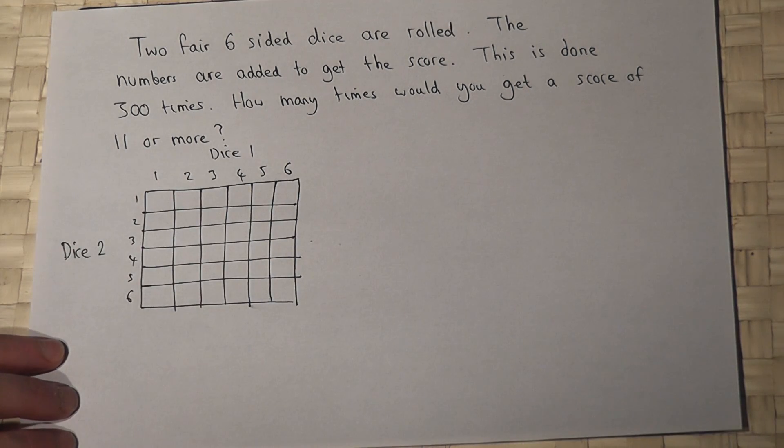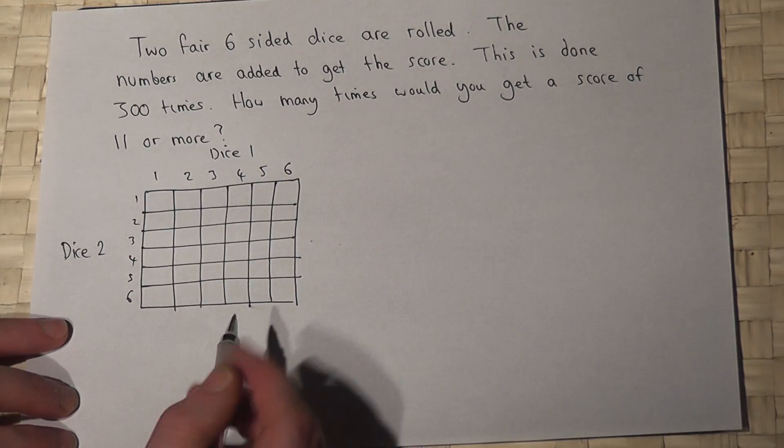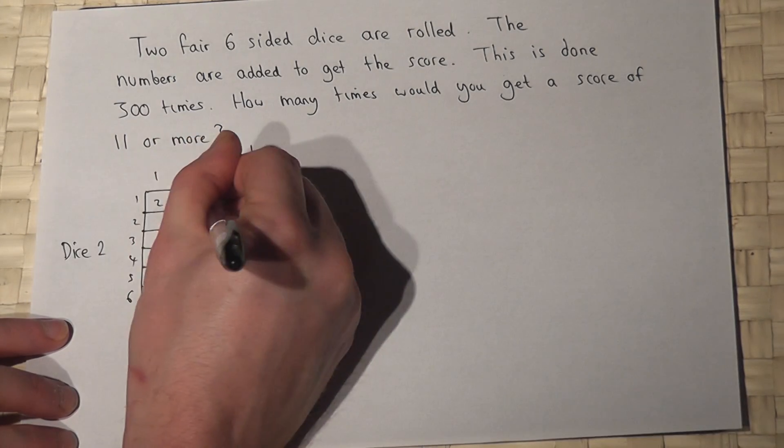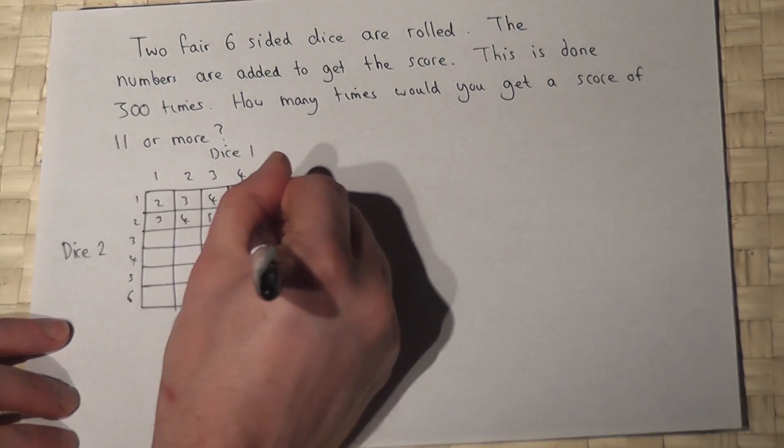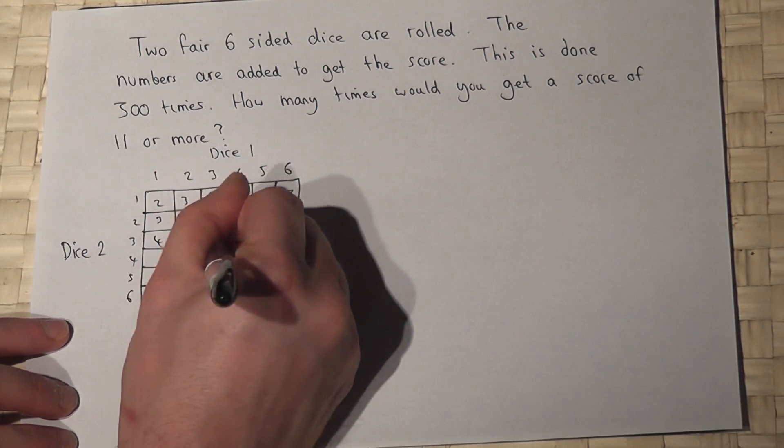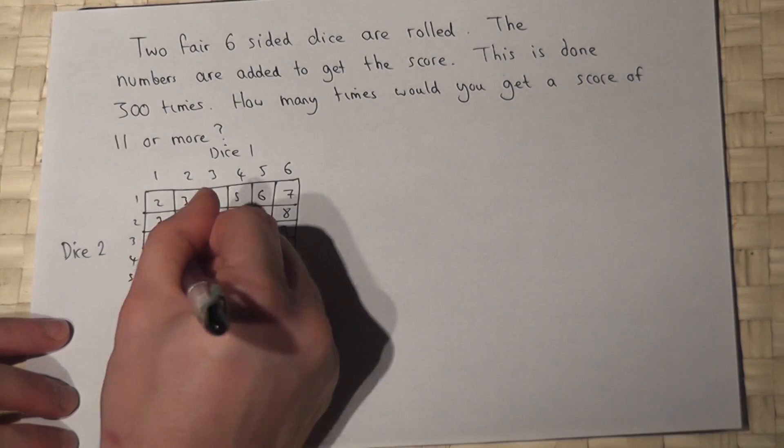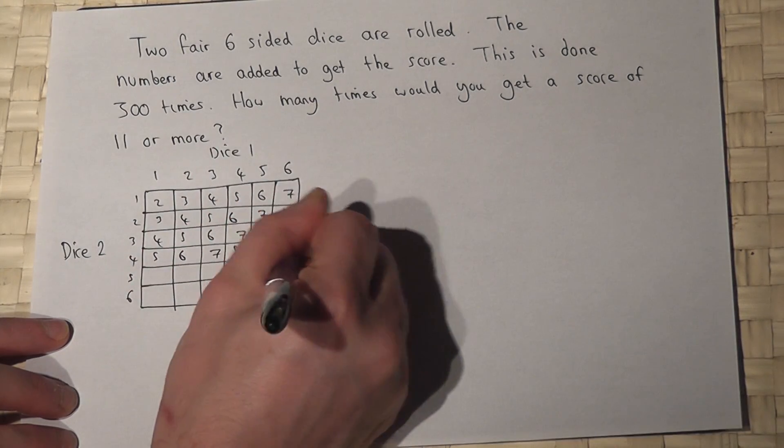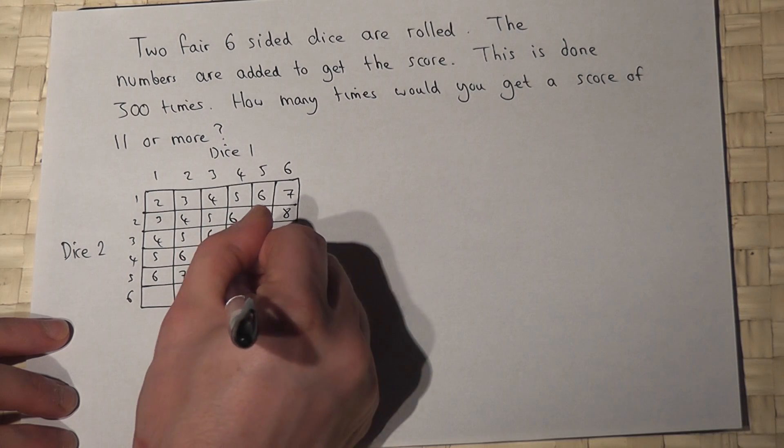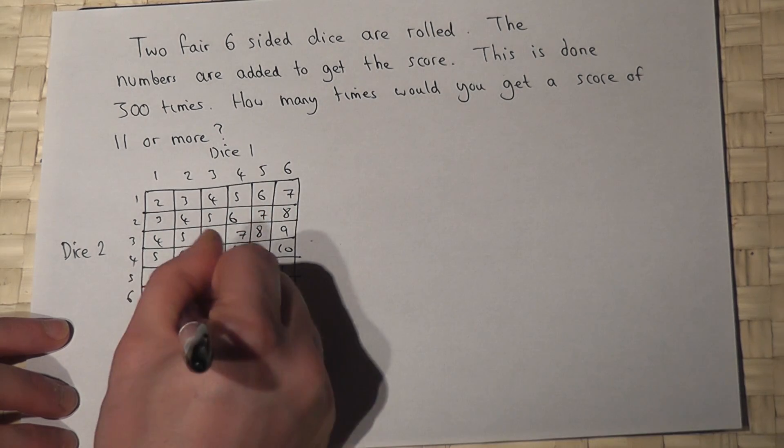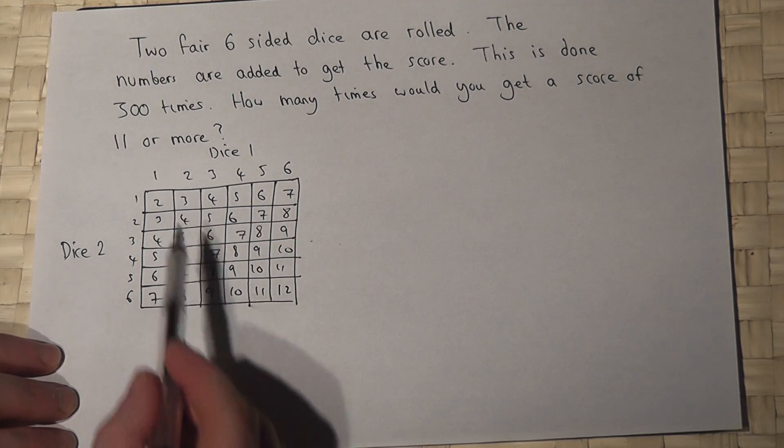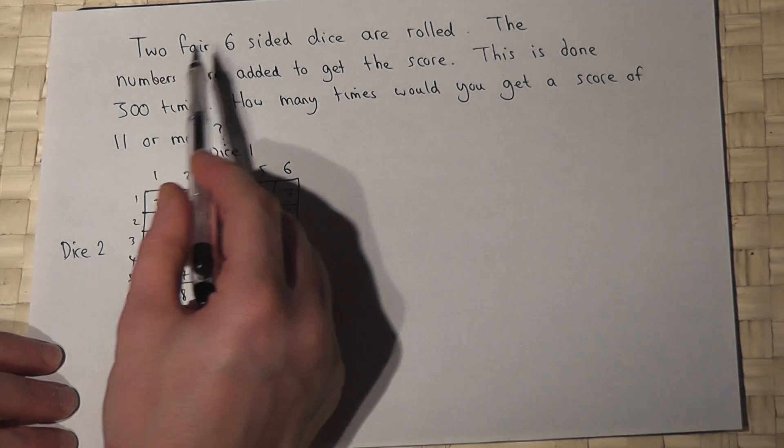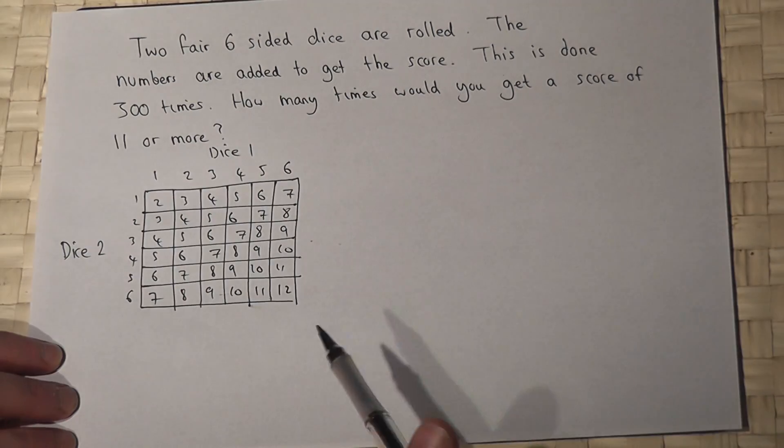Now to get our scores, we add together the numbers on the dice, so I can work out all the possible options quite quickly by adding up the numbers. Almost there.